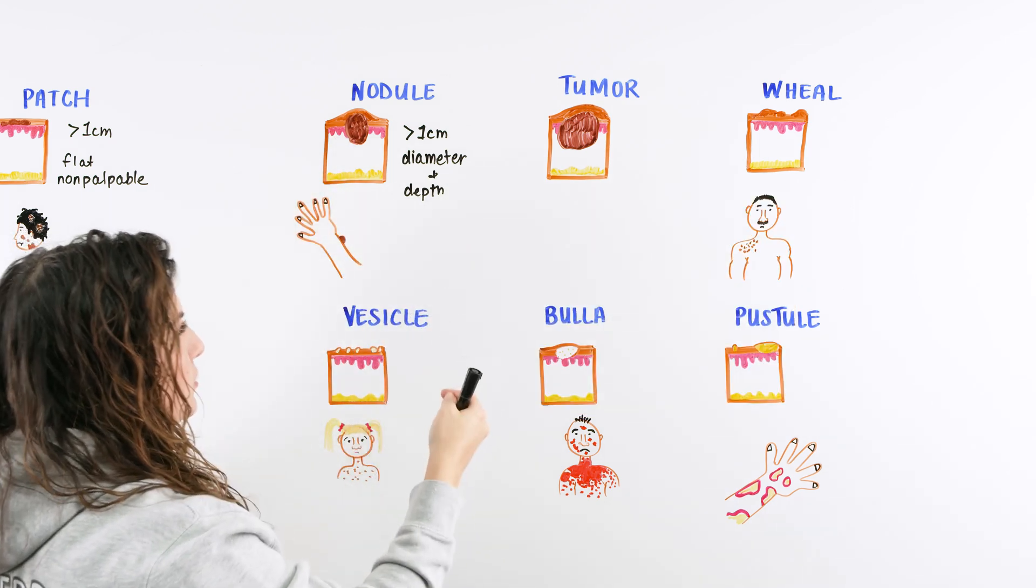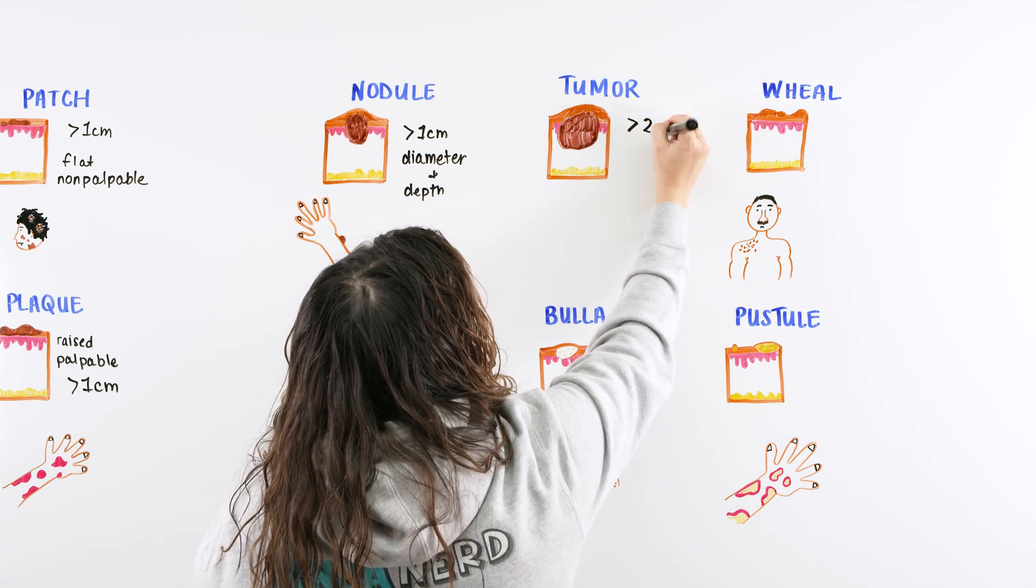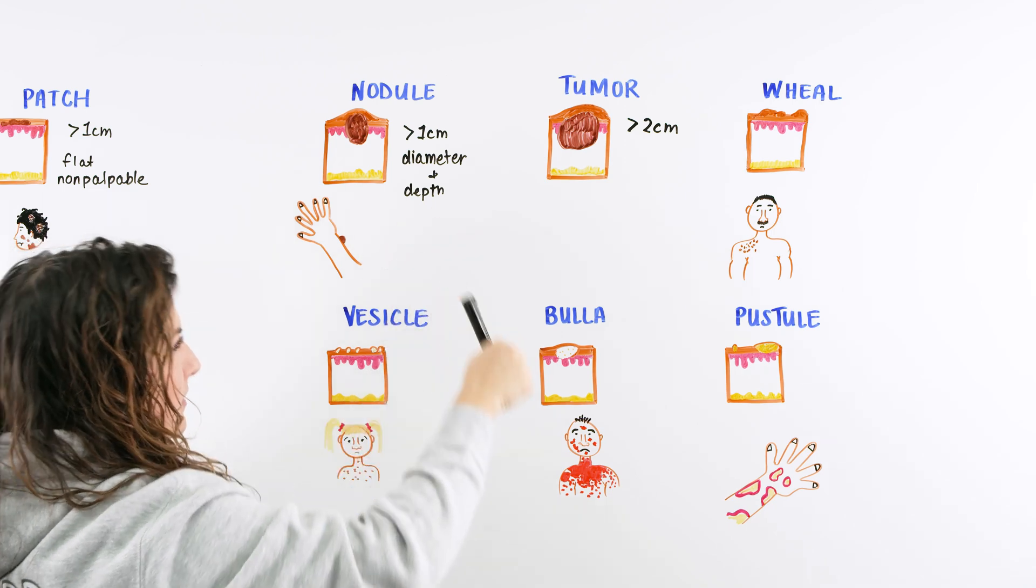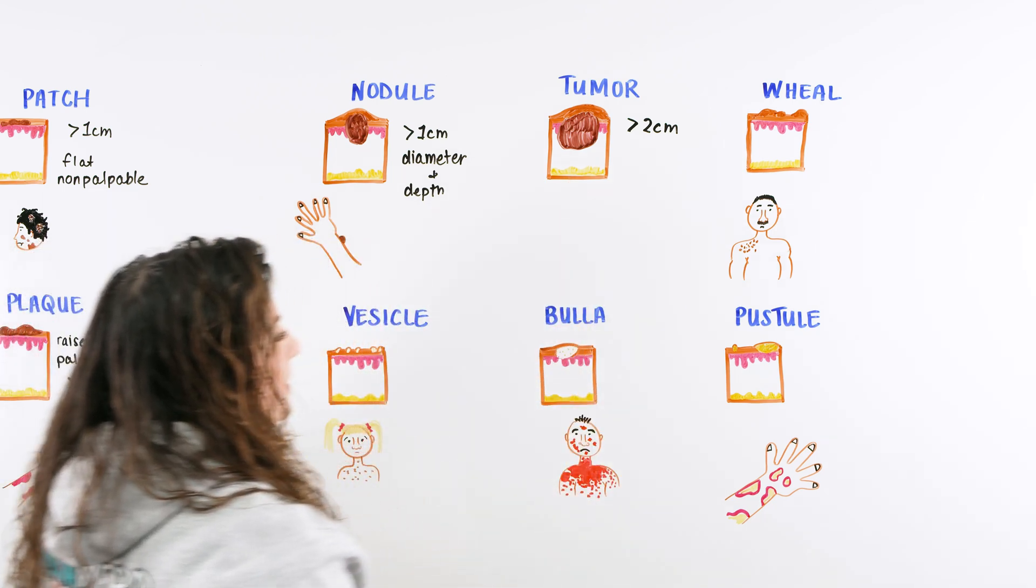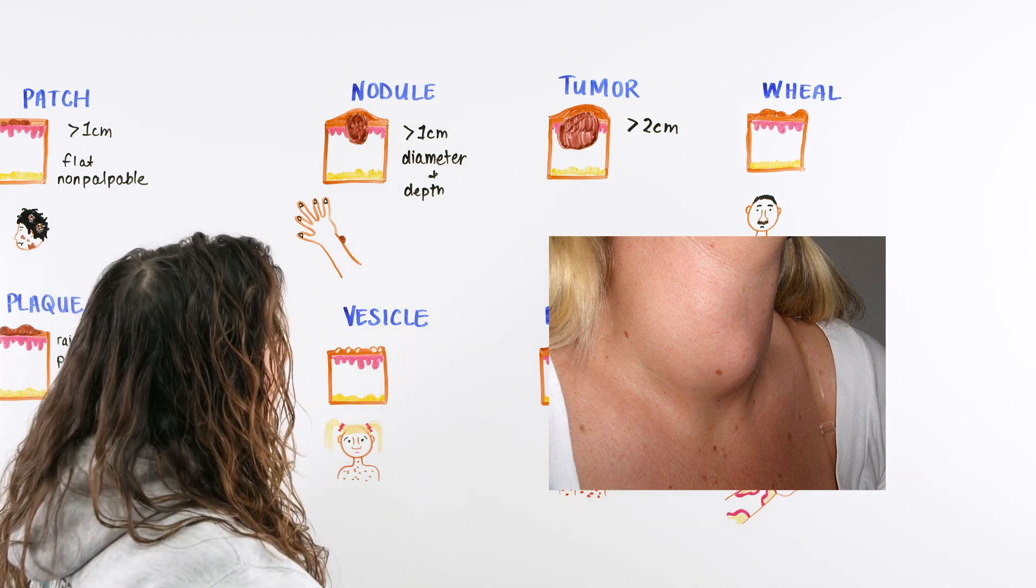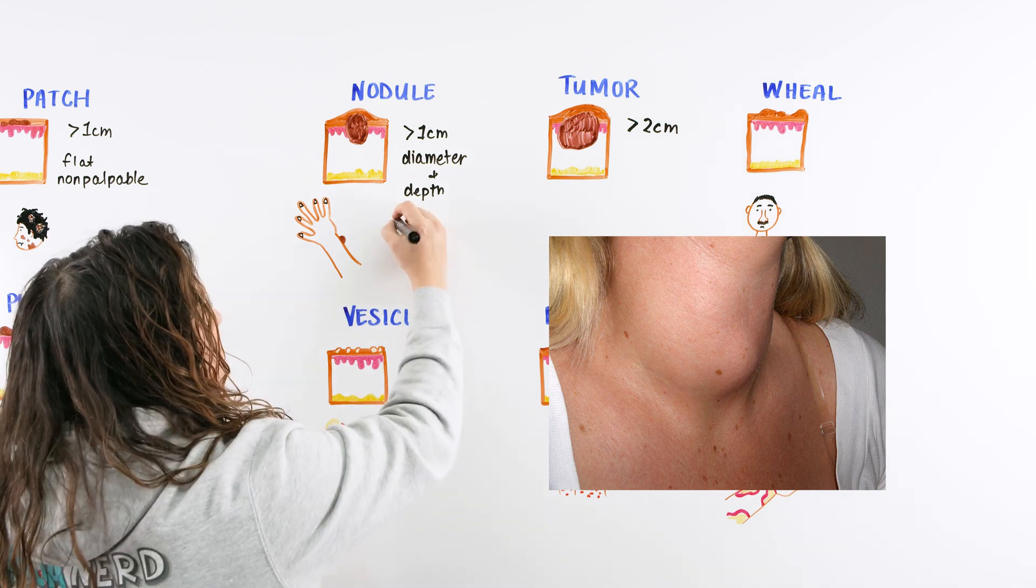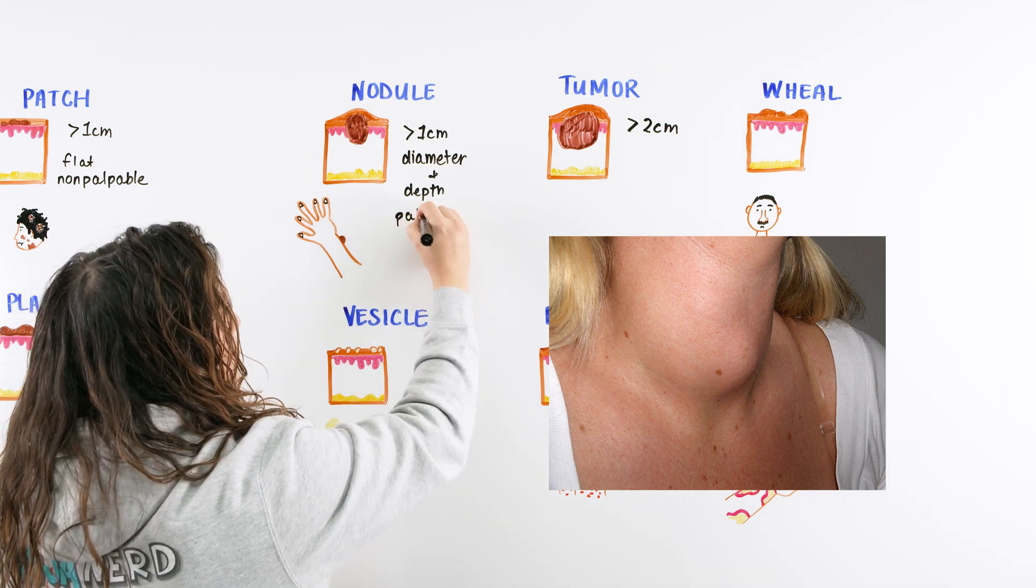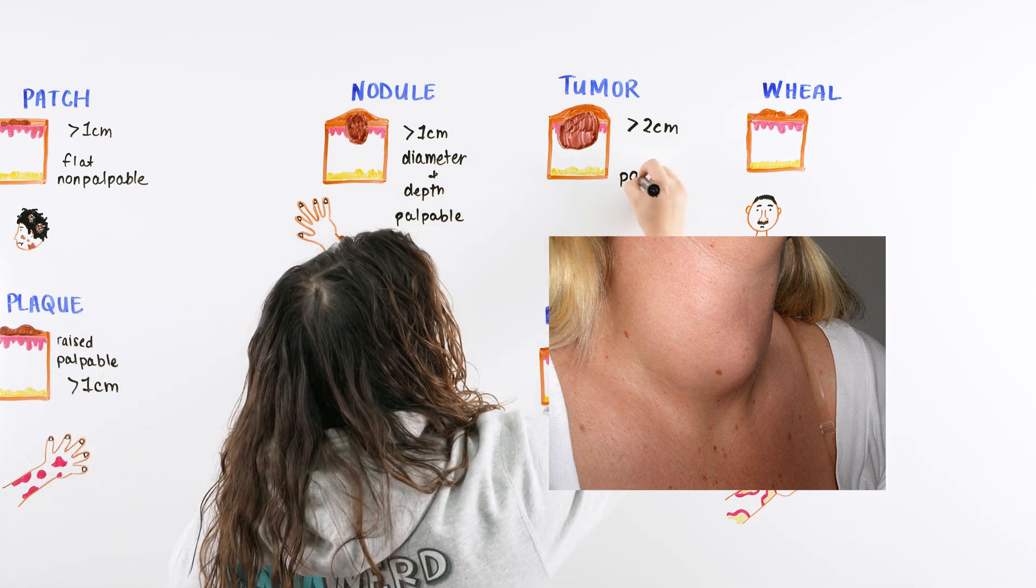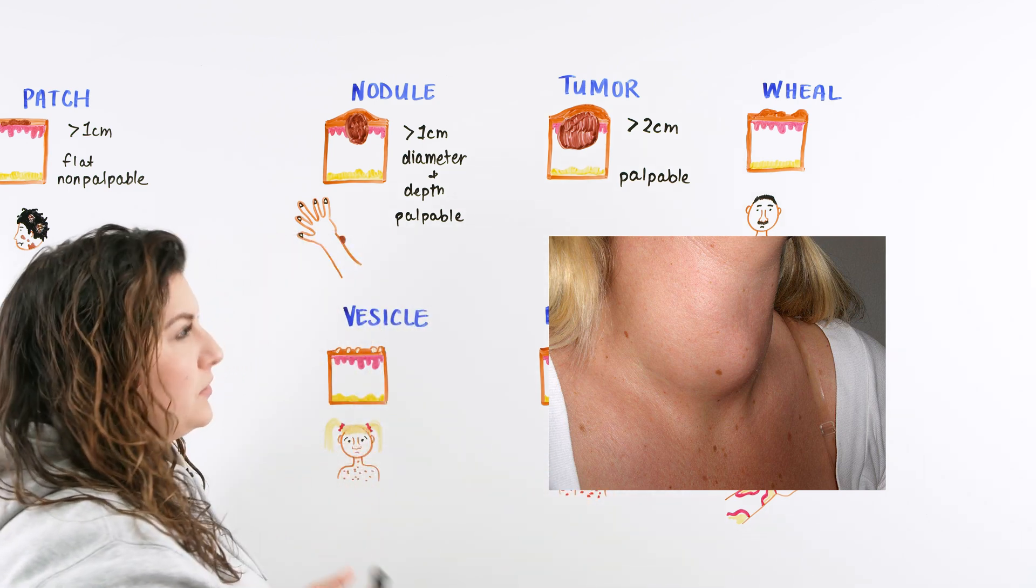It won't necessarily be different colored than the skin. It could be right around the same. That's because it's a little bit under the epidermis. Similar to the nodule, we can move right into tumor. Tumor is just going to be greater than roughly around two centimeters. It's also going to have a wide diameter and depth. It could even go down to the subcutaneous. That can be something like a lipoma, when someone has some type of lipoma underneath the skin and it's going to protrude up out. It's going to be palpable.